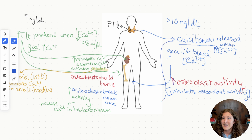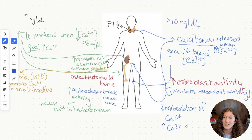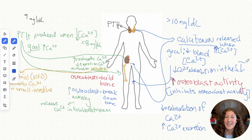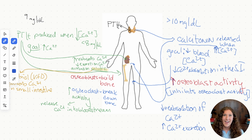Calcitonin also acts on the kidney, doing the opposite of PTH: it decreases reabsorption of calcium and increases calcium excretion. Calcitonin also decreases calcium absorption in the small intestine, so we absorb less calcium from our food. The net result of calcitonin release is to decrease serum calcium levels, whereas PTH release increases serum calcium levels. They have opposite effects — as PTH circulates, it inhibits calcitonin release, and vice versa. These are reciprocal hormones.